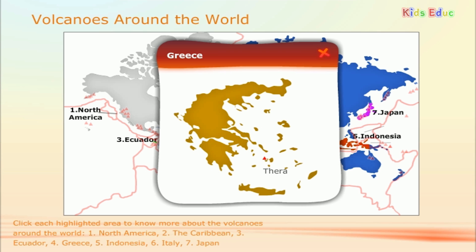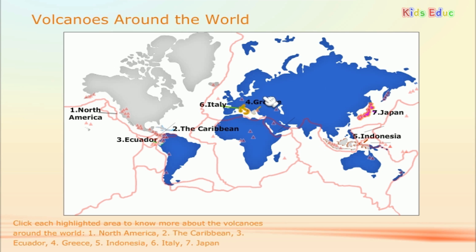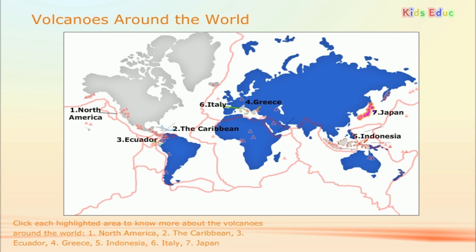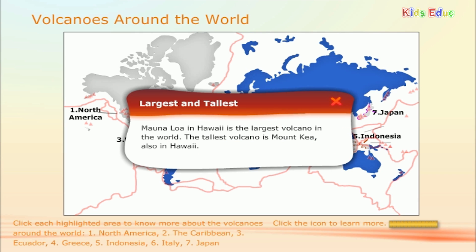Greece: The most important volcano found here is Thera. Indonesia: The important volcanoes found here are Krakatoa, Mount Merapi, and Mount Tambora. Italy: The important volcanoes found here are Mount Stromboli and Mount Etna. Japan: The important volcanoes found here are Mount Fuji, Kirishima, and Sakurajima. Mauna Loa in Hawaii is the largest volcano in the world, and the tallest volcano is Mauna Kea, also in Hawaii.